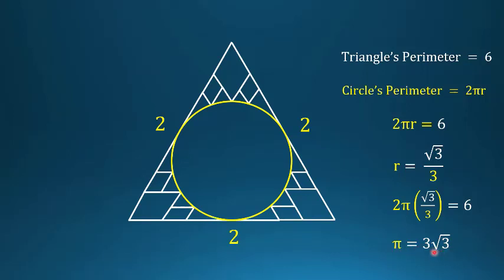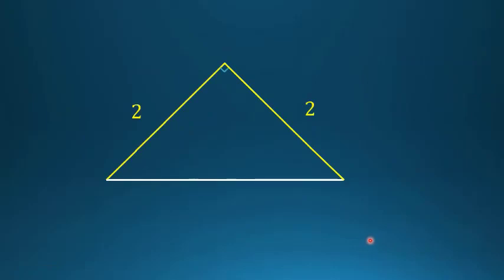But we know π is not equal to 3√3. In fact, 3√3 is greater than 5, and π is certainly not greater than 5. So what's going wrong here? Let's consider a similar example — what we call the staircase paradox.